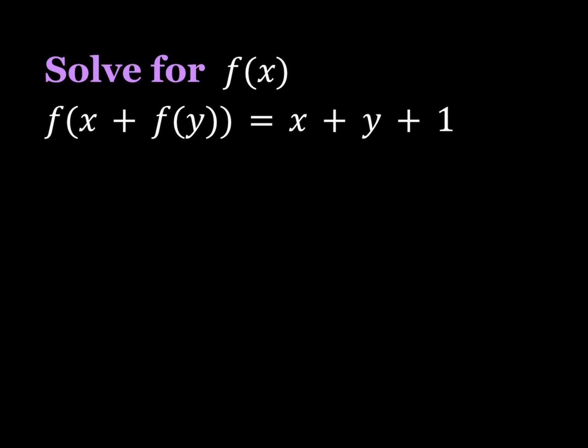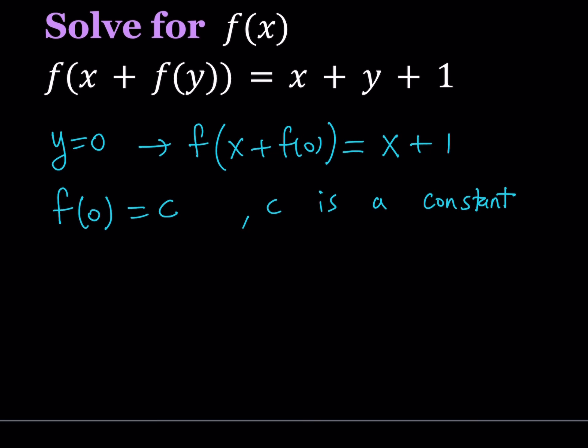So I'm going to first replace y with 0. And that's going to give me the following: f of x plus f of 0 equals x plus 1. Now f of 0 is obviously a constant and it is defined. Let's go ahead and call this something else. How about replace f of 0 with c? And c is a constant. So now that's going to give us something nicer. We can write it as f of x plus c equals x plus 1.